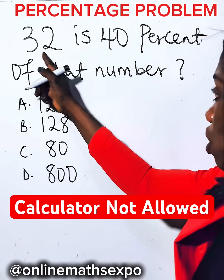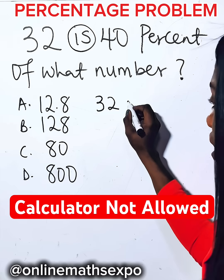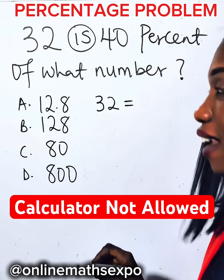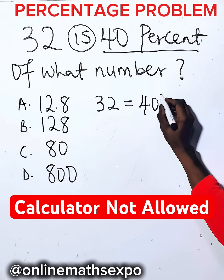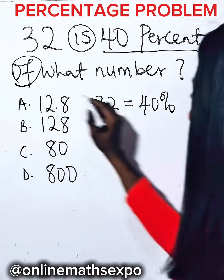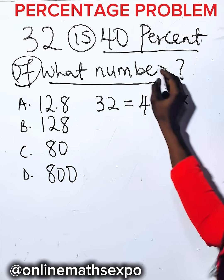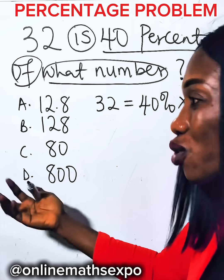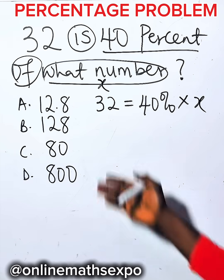You are asked: 32 is 40 percent of what number? So you have 32 equals—in mathematics that means equal. Now 40 percent. This is how you write 40%. In mathematics, 'of' means to multiply. Then what number? What number you don't know, so use another letter like x to represent it.